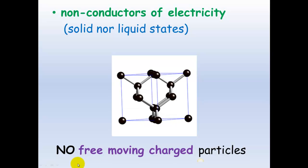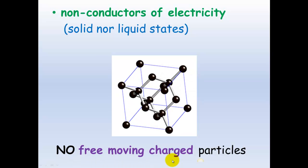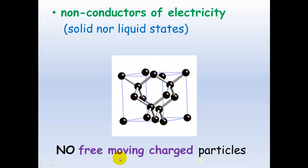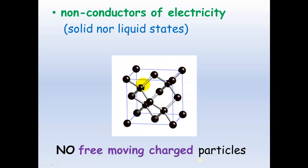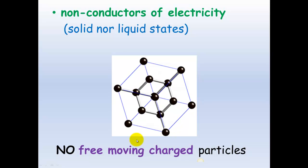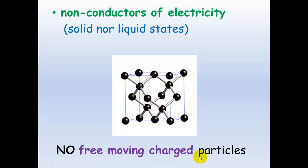They are non-conductors of electricity in both their liquid and solid states. They do not conduct electricity. And the reason for this is that there is no free-moving charged particles. Remember, to conduct electricity, there needs to be charged particles that are able to move. Here, all of the electrons are trapped and being shared between these two atoms in these bonds. So there are no free-moving charged particles that can conduct electricity.